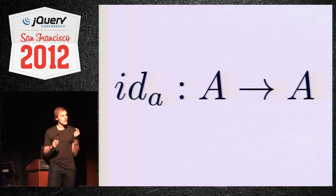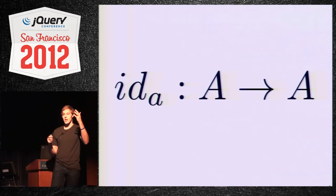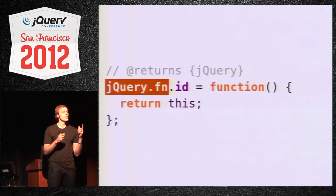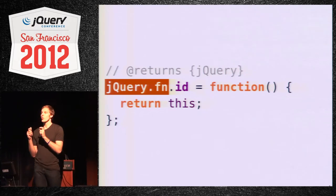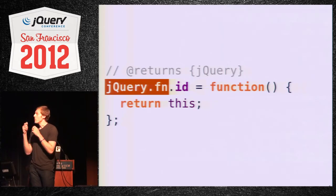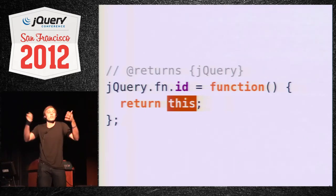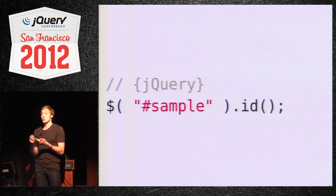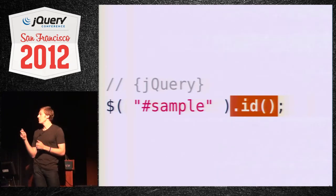Now these laws get a bit more complex and require some knowledge of how jQuery methods work. Specifically, when you define a method on jQuery.fn, the jQuery object is available to you as 'this' when it's invoked. So 'this' becomes our first argument in identity. In identity, all we do is return the thing we've been given — we just return 'this'. So if you invoke this new identity method, it just gives you back that same jQuery object without doing anything else.